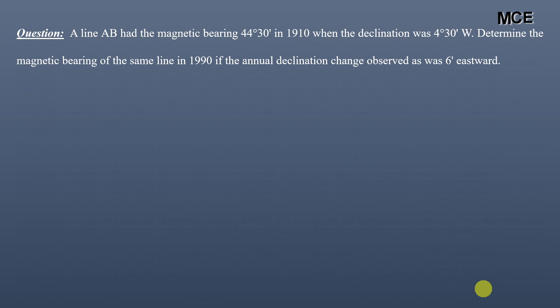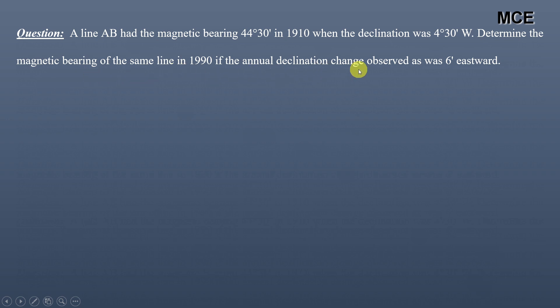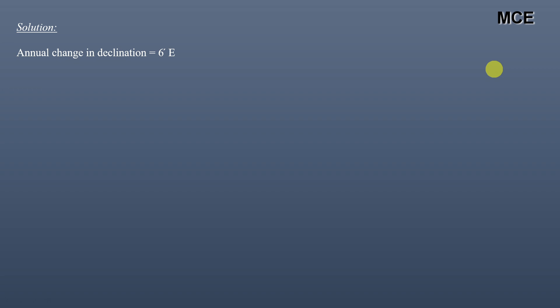Hello and welcome back to Master Civil Engineering. In this video you will learn how to find the true bearing of a line in surveying when we know the magnetic bearing and the declination. The given question states: a line AB had the magnetic bearing 44°30' in 1910 when the declination was 4°30' westward. We have to determine the magnetic bearing of the same line in 1990 if the annual declination change observed was 6 minutes eastward.